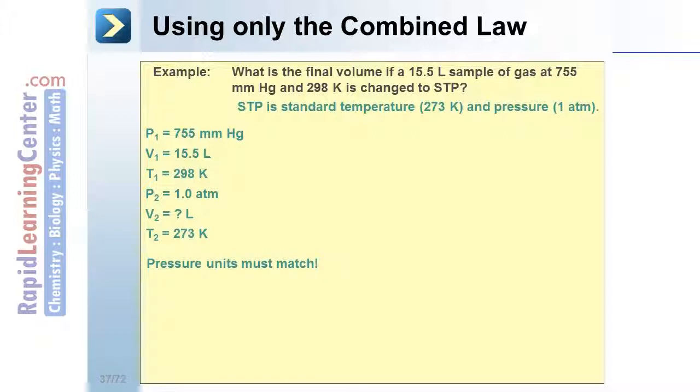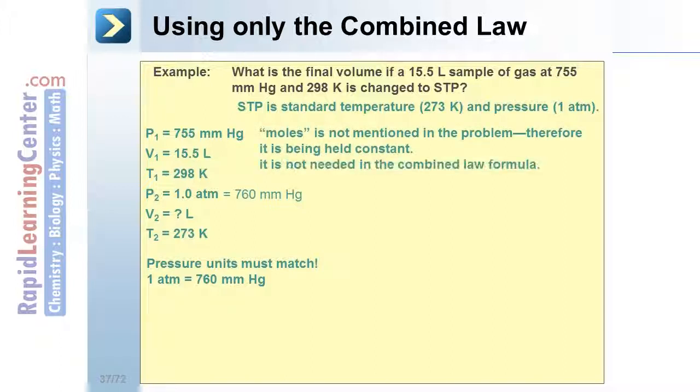Remember that pressure units must match. Use the equality that 1 atm is equal to 760 millimeter mercury. Moles is not mentioned in the problem. Therefore, it's being held constant. It can be removed from the combined gas law.